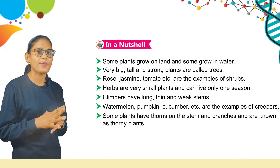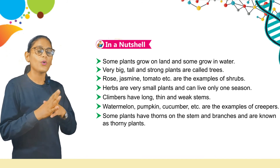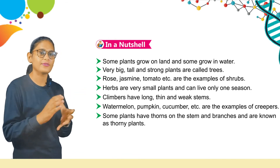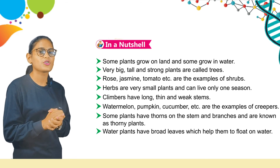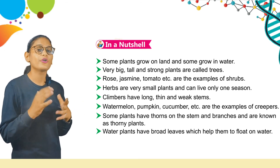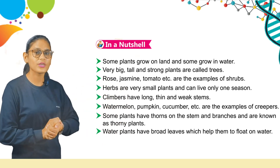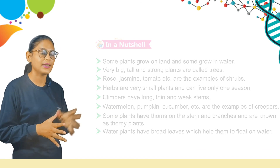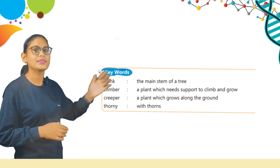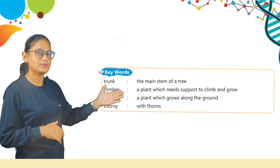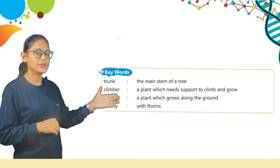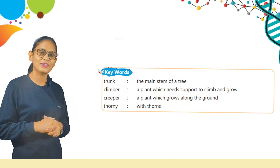Some plants have thorns on the stem and branches and are known as thorny plants. Water plants have broad leaves which help them to float on water. Keywords: Trunk — the main stem of a tree. Climber — a plant which needs support to climb and grow. Creeper — a plant which grows along the ground. Thorny — having thorns. Thank you, students.